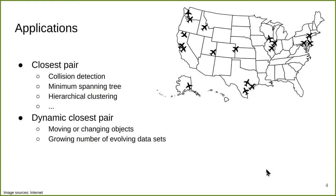There are numerous applications for the problem. The closest pair is very well studied in computational geometry. It is used for collision detection, minimum spanning tree, hierarchical spatial clustering, etc. For dynamic closest pair, it is motivated by modeling moving or changing objects and the growing number of evolving datasets. In a simulated scenario such as a video game or in real air traffic control, we can use the dynamic closest pair to model moving objects and objects that appear or disappear, while maintaining the closest pair to monitor potential collisions.